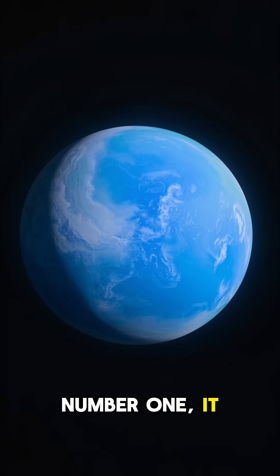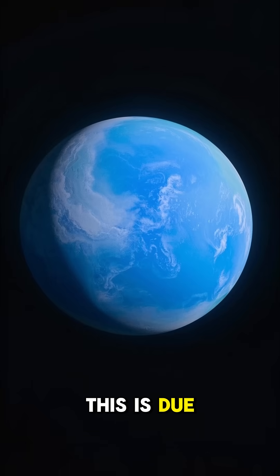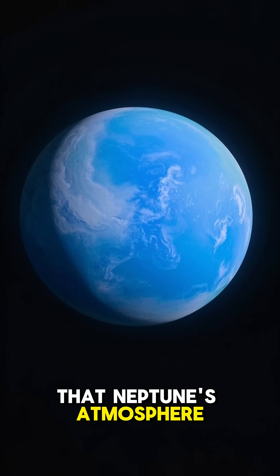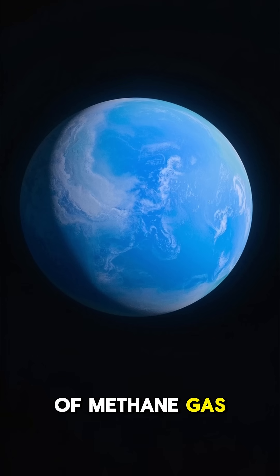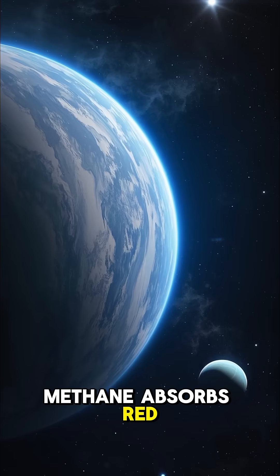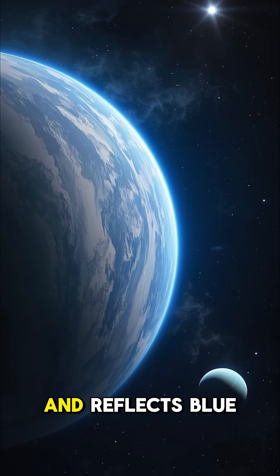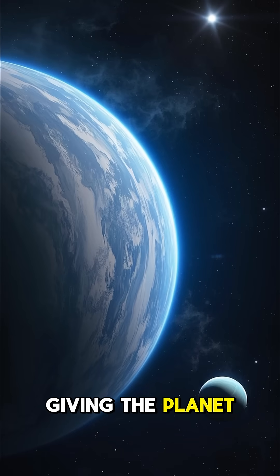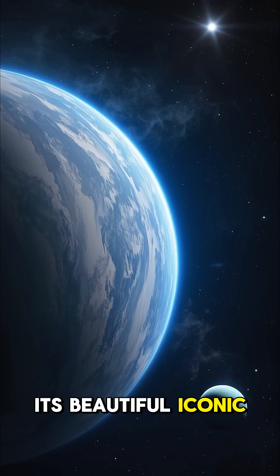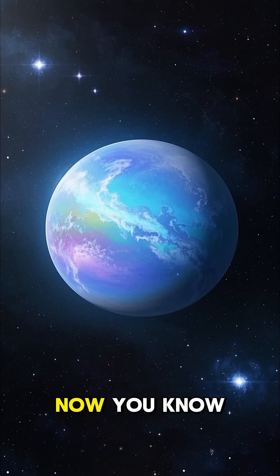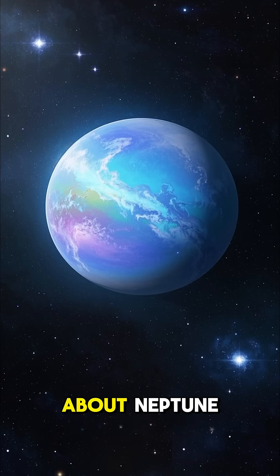Number one, it has a blue color. This is due to the fact that Neptune's atmosphere contains a lot of methane gas. Methane absorbs red and infrared light and reflects blue, giving the planet its beautiful, iconic color. Now you know some amazing facts about Neptune. See you soon.